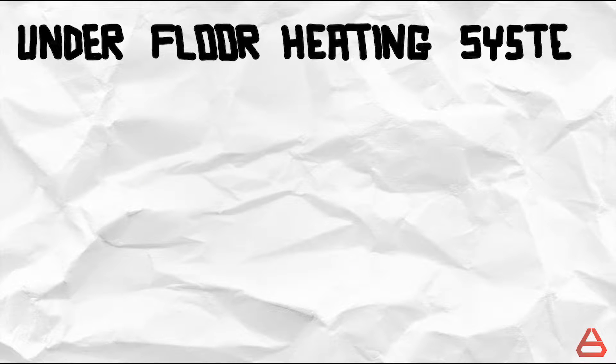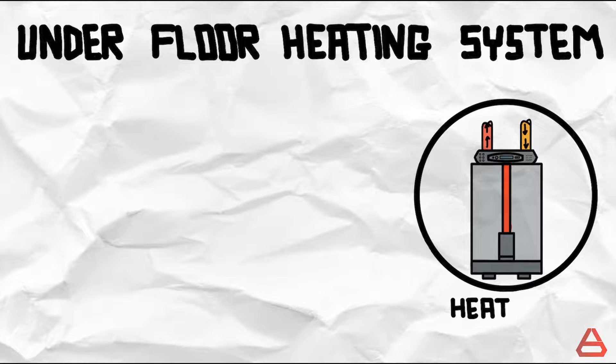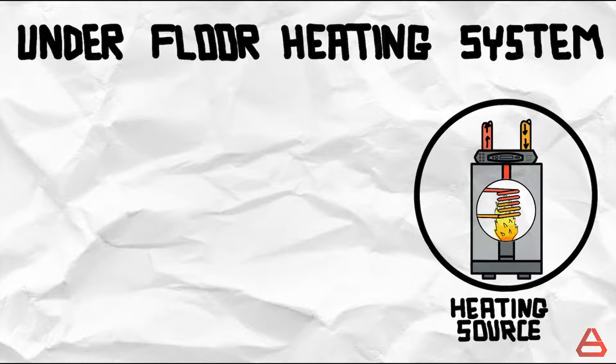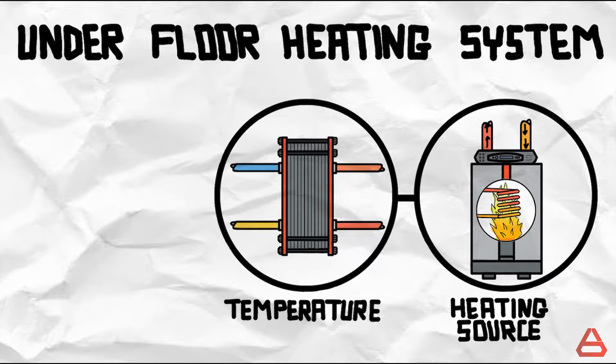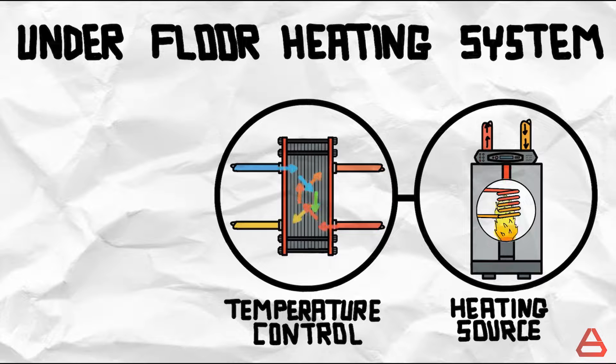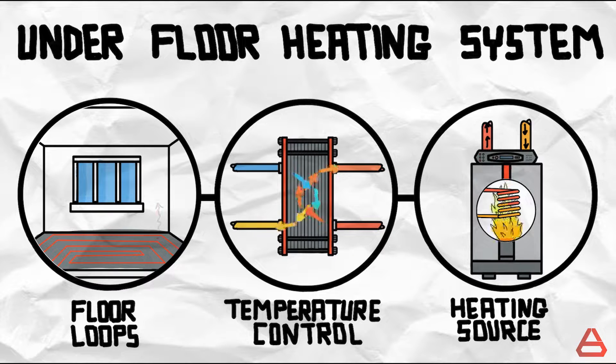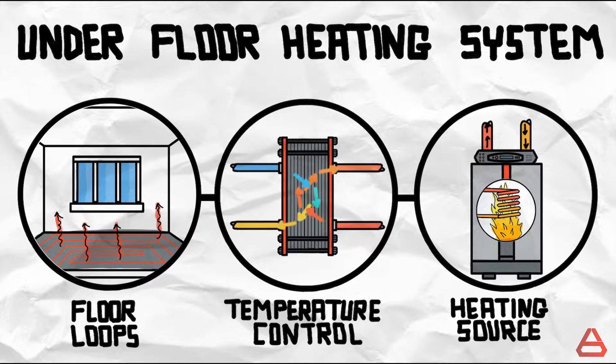So a basic floor heating system would look something like this: a heating source to provide the thermal energy needed to heat a space, a temperature control mechanism to control the temperature of water reaching the floor loops, and finally the loops themselves to deliver the warmth to the floor and in turn to the room space.